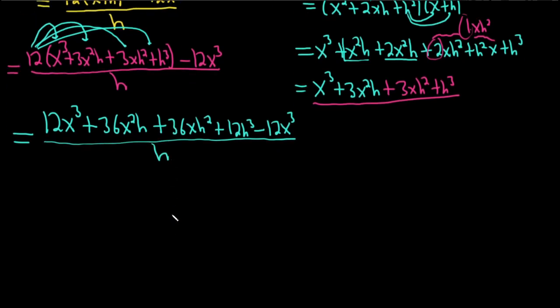Alright. Some stuff should cancel. Yes. Yes, it does. Look, these 12x cubes go away. And we're left with all of this stuff. Now, notice all of these things have something in common. They have an h in common. So let's go ahead and factor that out. So we have h parentheses, 36x squared.